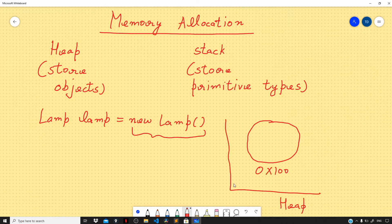Then Java runtime is going to execute the left-hand side part of this line of code. Here it will allocate some memory on the stack, and in this memory location it will store the address of the lamp object, which is 0x100. So now in this memory location that is present on the stack, we are storing the address of the lamp object.